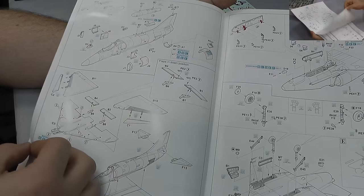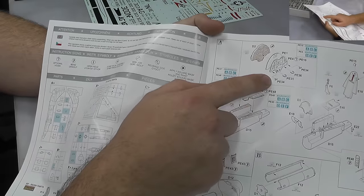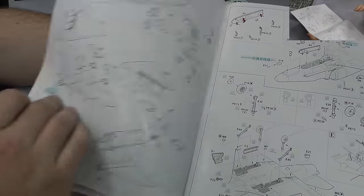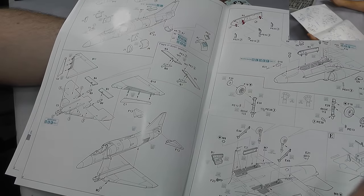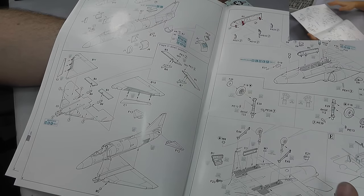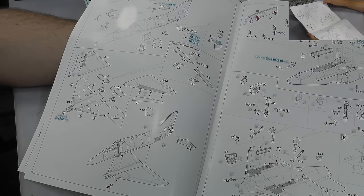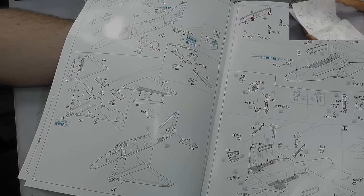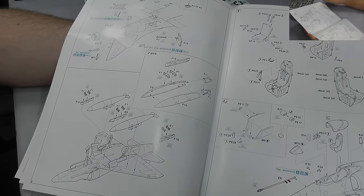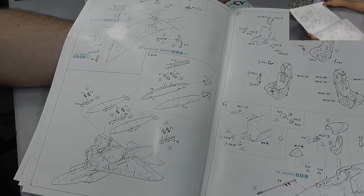With this, we are going to get loads of photo etch so we can really jazz up the cockpit and everything. As for options, you've got the usual landing gear up and down, you can have flaps and slats moved here, there and everywhere, air brakes - there is a few options that we can do with this, the arrestor hook and everything.